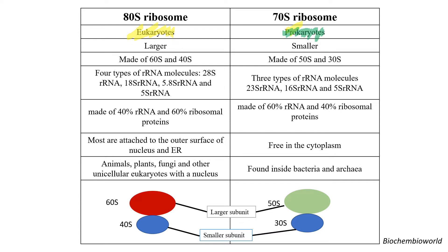In terms of size, the 80S is larger in comparison to the 70S. They are made up of two subunits: the 60S and the 40S. The 'S' basically stands for the Svedberg unit, which is the sedimentation coefficient. In comparison, the 70S ribosome has two subunits termed the 50S and the 30S.